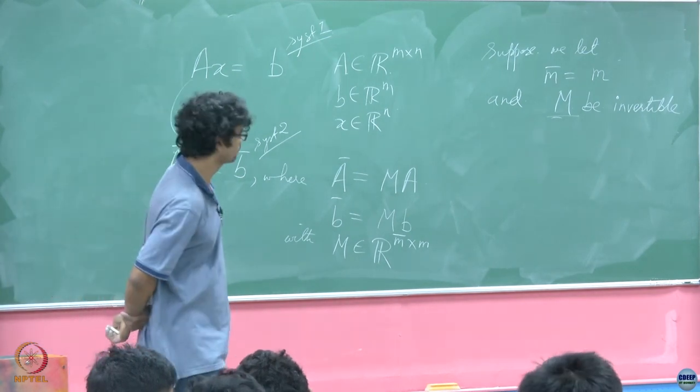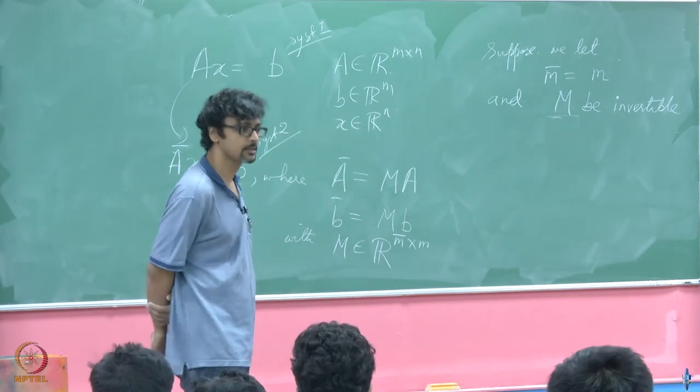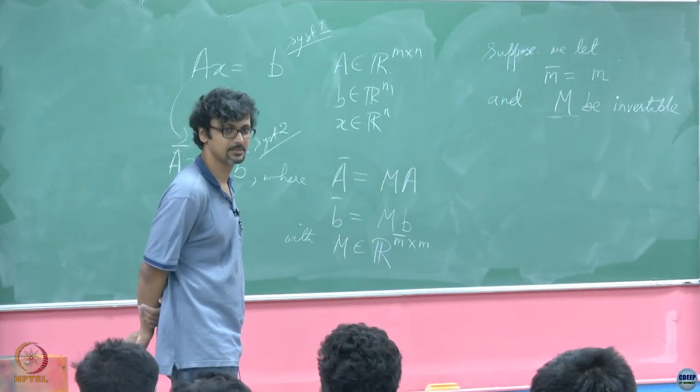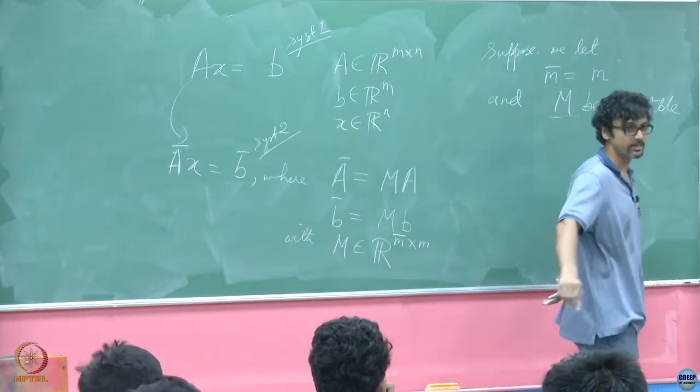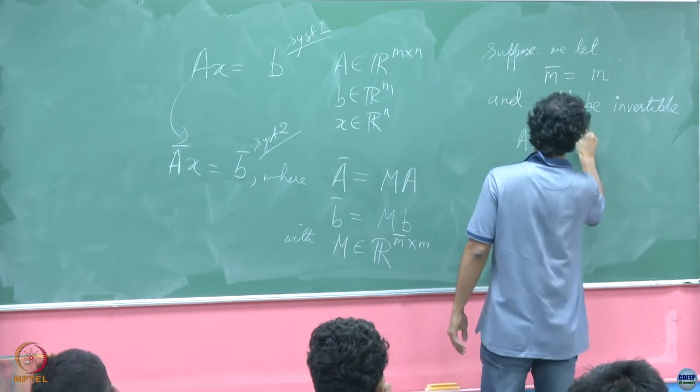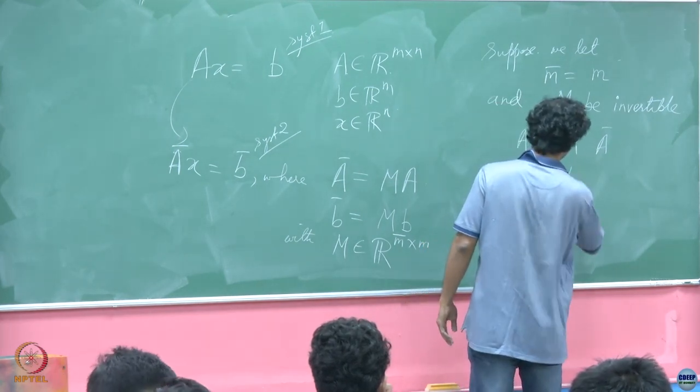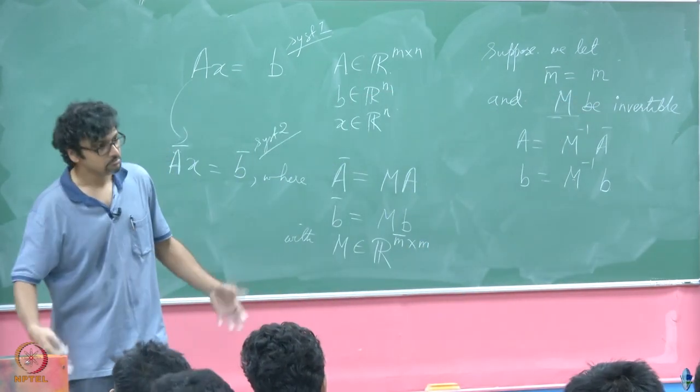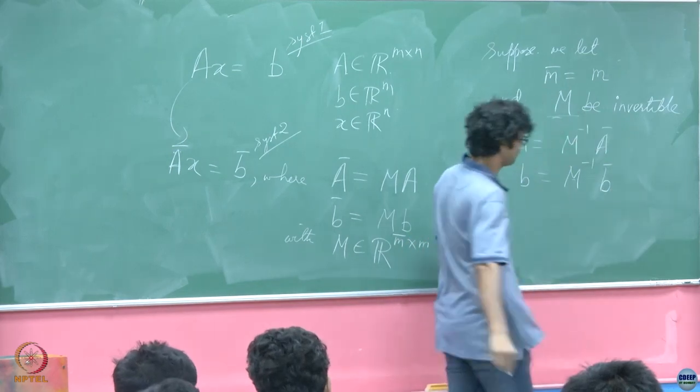Any solution to system 1 would be solution to system 2. Anything beyond that? When I have made this special choice? The converse is also true. You see now because we have chosen this M to be invertible, I might as well say from this equation that A is equal to M inverse A bar and b is equal to M inverse b bar.